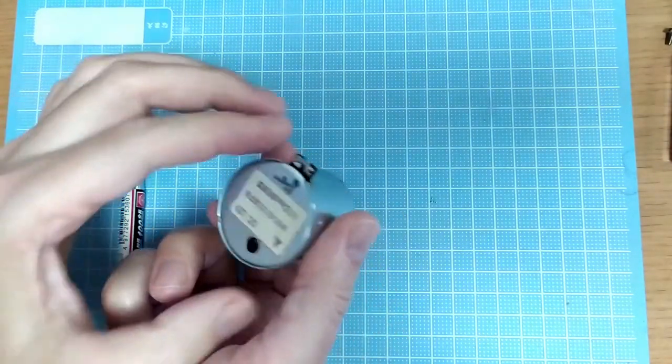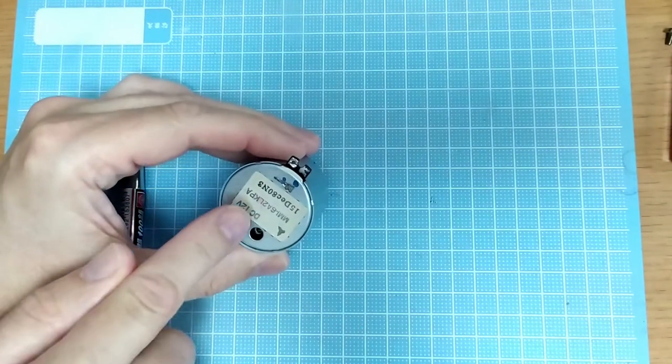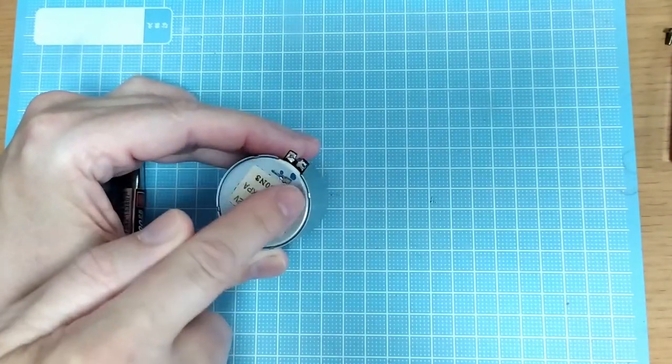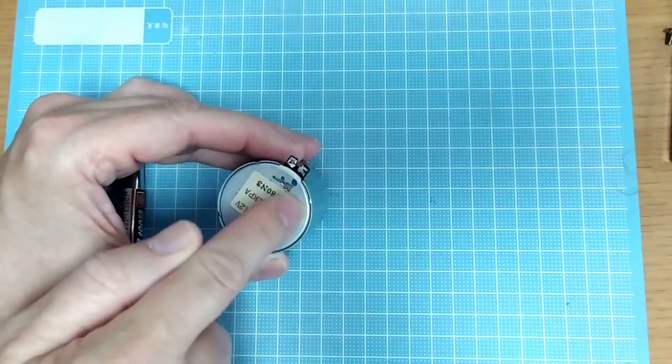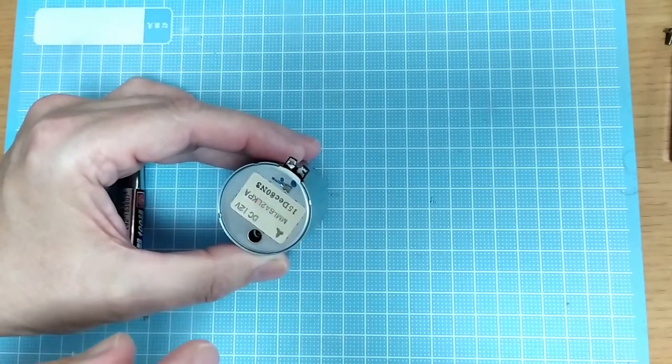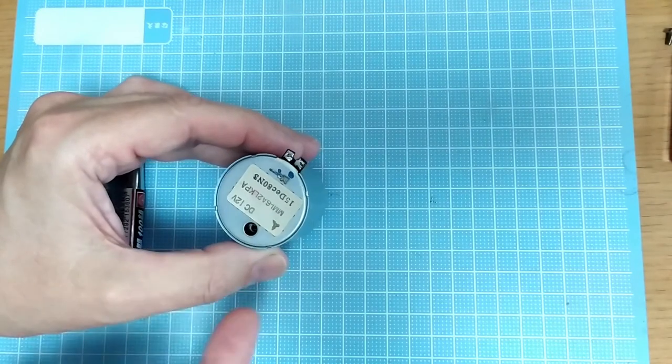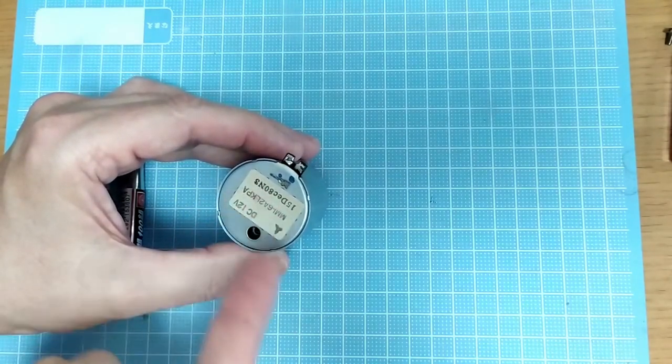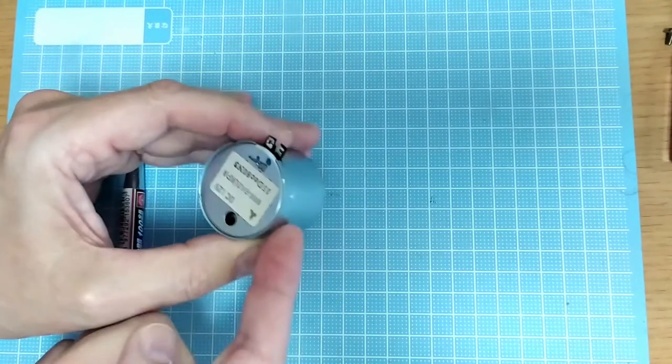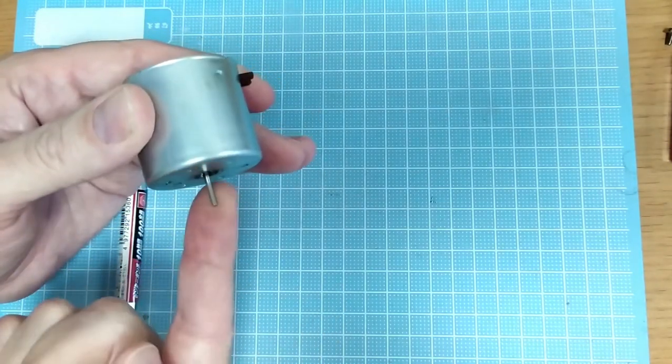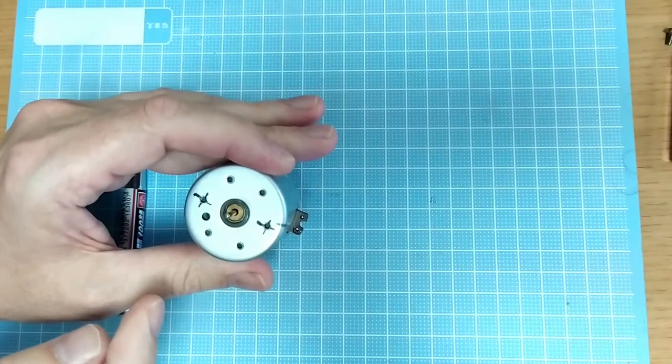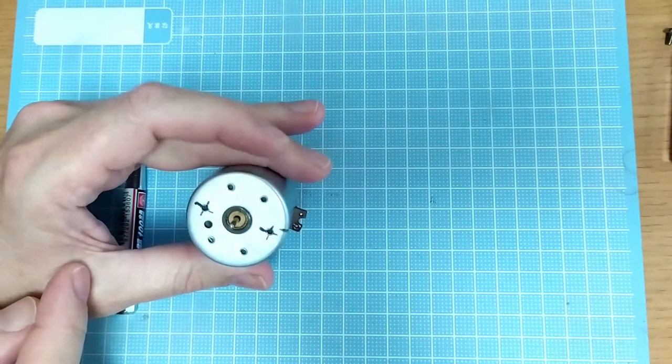If we look around on the other side, there's four little tabs here that have been hammered in, and that retains this plate here. When this plate comes out, you can actually see the PCB and the actual motor unit inside there. This is really just a case for the motor, and once this plate is out, that will push out.